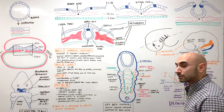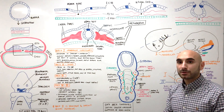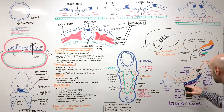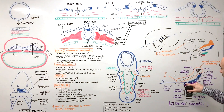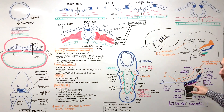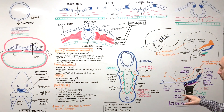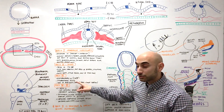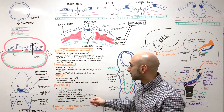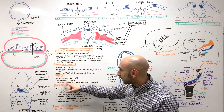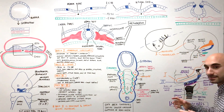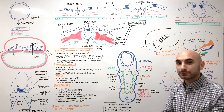Pharyngeal arch number three is color-coded in purple. It gives the lower portion and greater horn of the hyoid bone. Its nerve is the glossopharyngeal nerve, and the muscle it gives is the stylopharyngeus muscle.